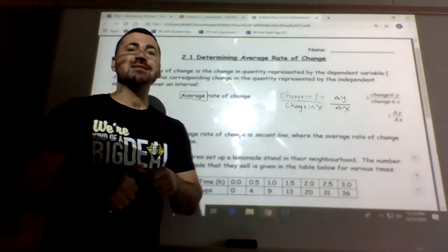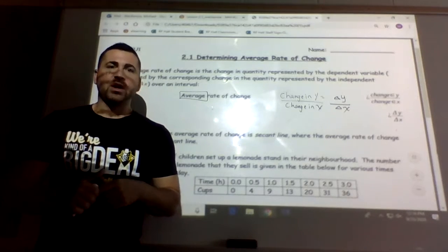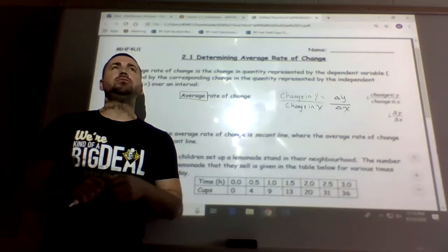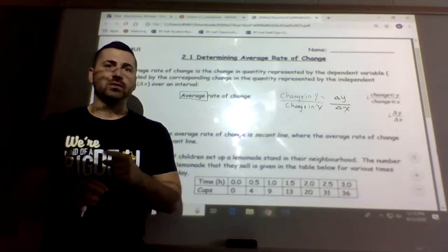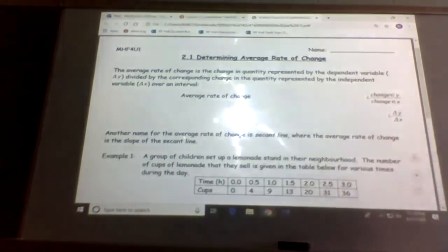Another way you know when it's average is in the question they'll give you multiple values, whereas instantaneous, which we're going to do on Friday, you only get one value. Alright, so let's go down.